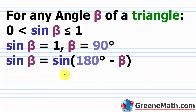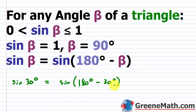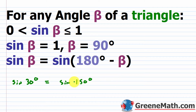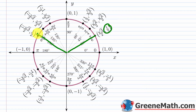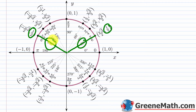We also need to understand the concept of a reference angle, because when we have two solutions, this will come up. For example, sine of 30 degrees equals sine of 150 degrees, since 180 minus 30 is 150. Both have a sine value of one-half. When we use the inverse sine to find a missing angle, it might give us 30 degrees, but 150 degrees is also possible.